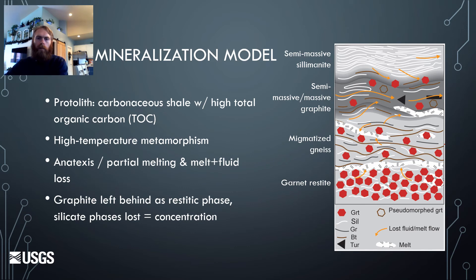In our model of graphite mineralization developed from these datasets, we start with a high total organic carbon carbonaceous shale that was subsequently subjected to high-temperature metamorphism and partial melting. The melt and fluid were extracted and lost, probably through shear zones, with graphite left behind and enriched as a restitic phase, at the same time also generating garnet and sillimanite restites. The key here is this anatexis or partial melting, which has removed silicate material, thereby concentrating graphite.